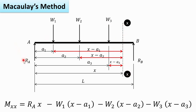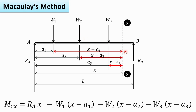Taking the moment about section XX, considering all forces on the left hand side: Ra produces a clockwise moment, and the perpendicular distance between Ra and section XX is X, so it is positive. W1 produces an anticlockwise moment, so it is negative — W1 multiplied by (X minus A1). Similarly, W2 produces anticlockwise moment: W2 into (X minus A2). W3 also produces anticlockwise moment: W3 into (X minus A3).